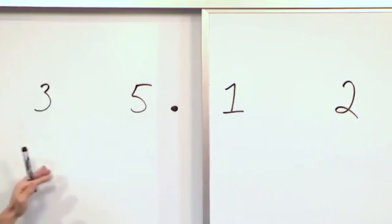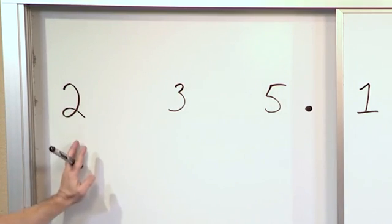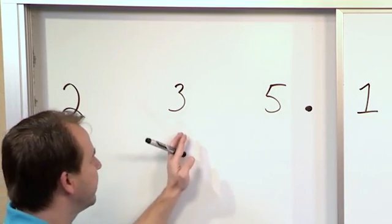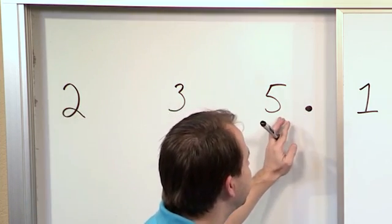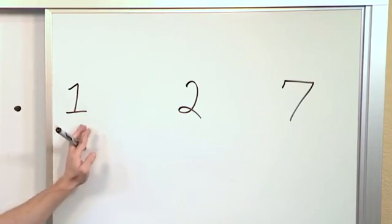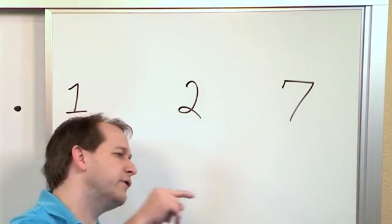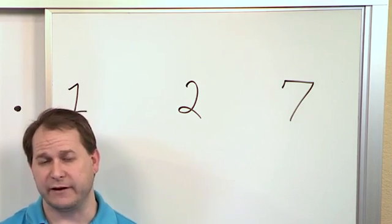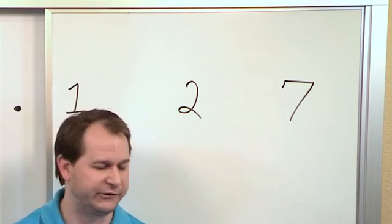So you already know that in numbers, let's talk about just the first three numbers. The first digit is worth the most and then this is worth a little bit less, this is worth less. Well the same thing continues on the other side of the decimal point. This is worth less, this is worth less, and this is worth even less. So the farther you go to the right, even after your decimal point, the less important or the less worth that digit actually has for you.